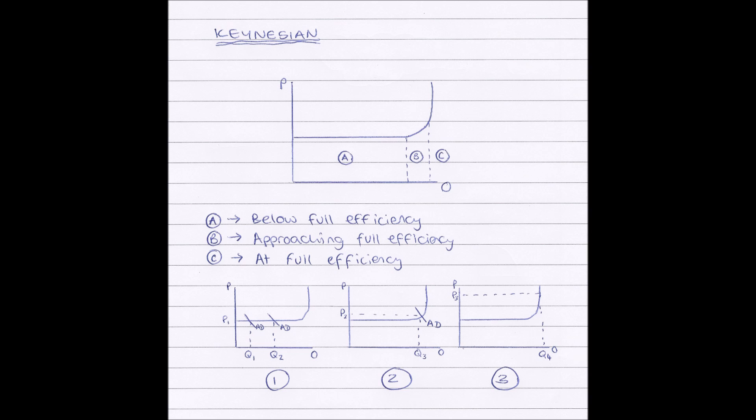Now there is a reason for this. And this is because Keynesian economists believe that in the long run, the economy can work below full efficiency. So whereas classical economists believe that in the long run, booms cancelled out busts, Keynesian economists believe that busts can be bigger and there can be more of them than booms.